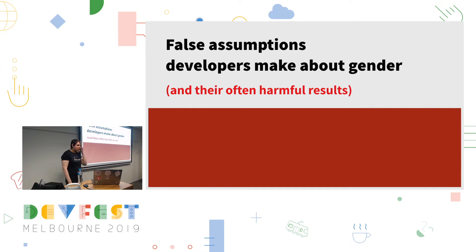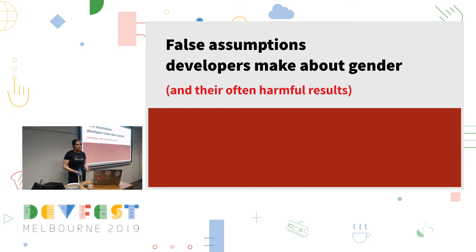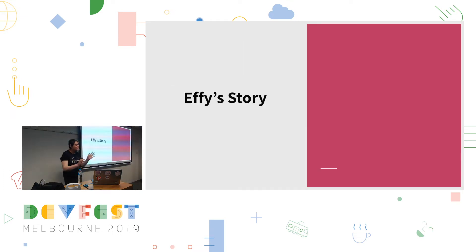And it's not just trans people who can suffer from these false assumptions made about gender. Think about how it would feel if you were a woman who really wanted a baby but was unable to get pregnant, seeing ads like that come up in your feed. That assumption was harmful and it harmed people actively. But let's get back to my story.